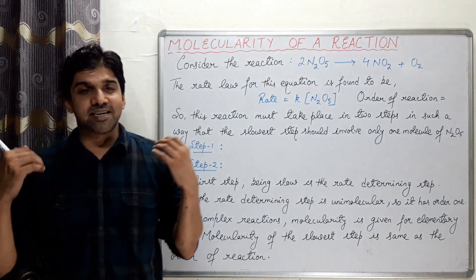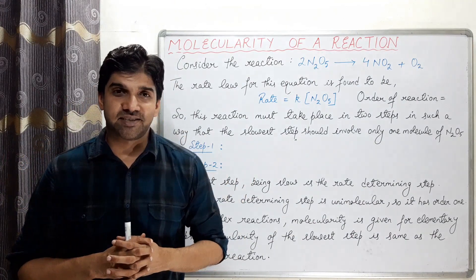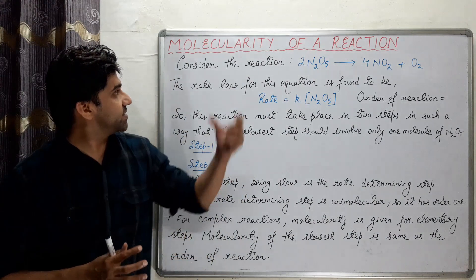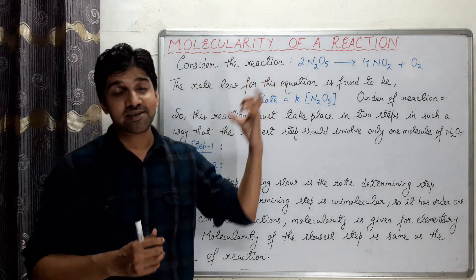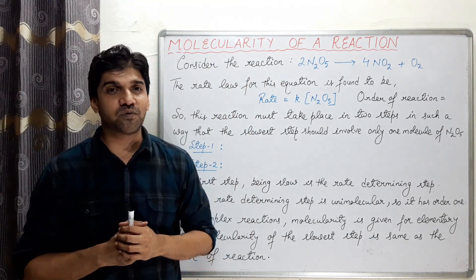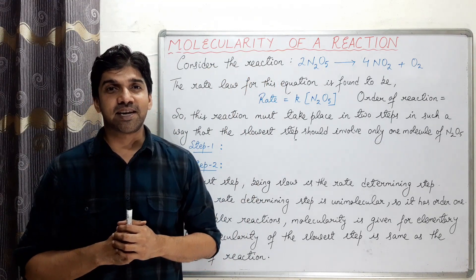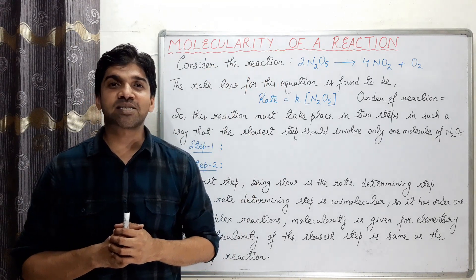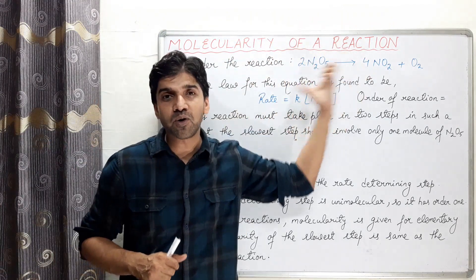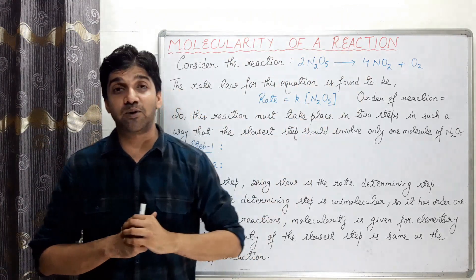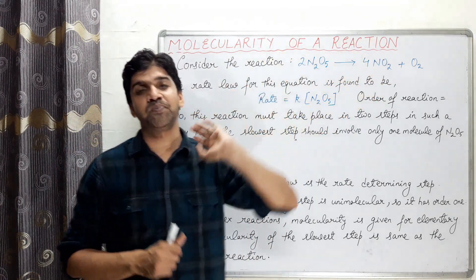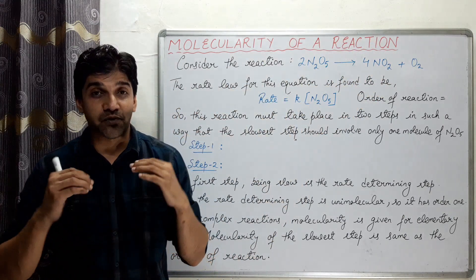Let's discuss about complex reactions. Consider a reaction in which two moles of N2O5 (nitrogen pentoxide) decompose to form four moles of NO2 and one mole of O2.